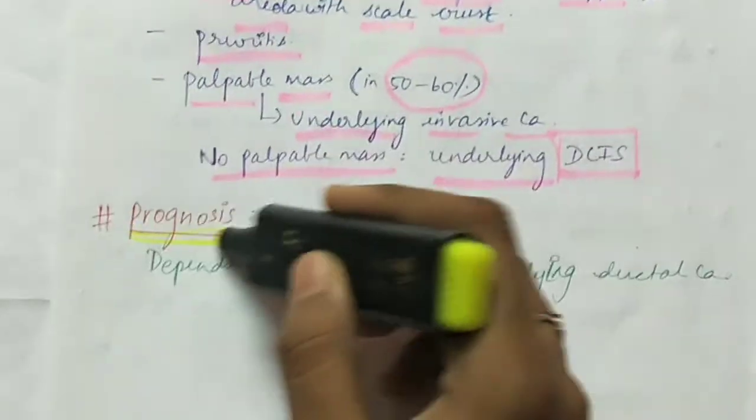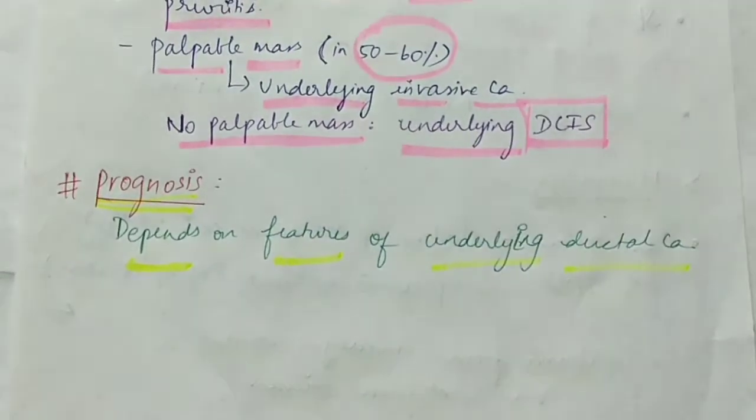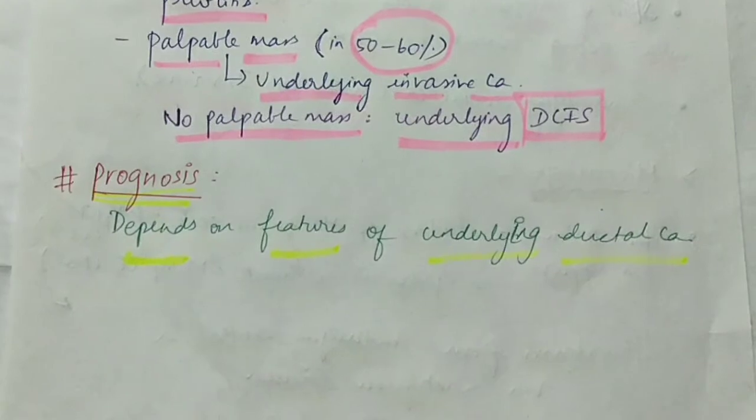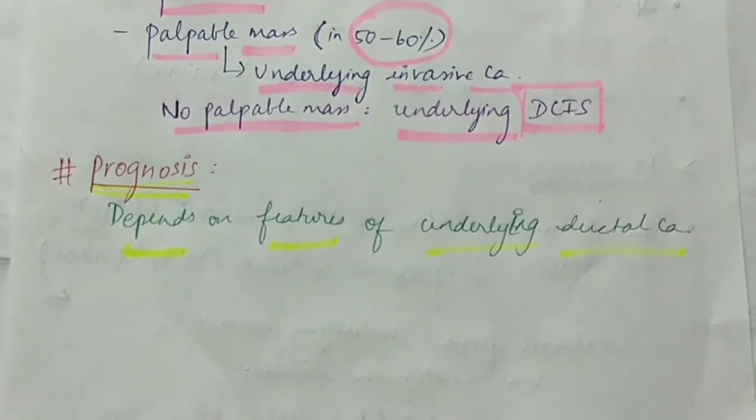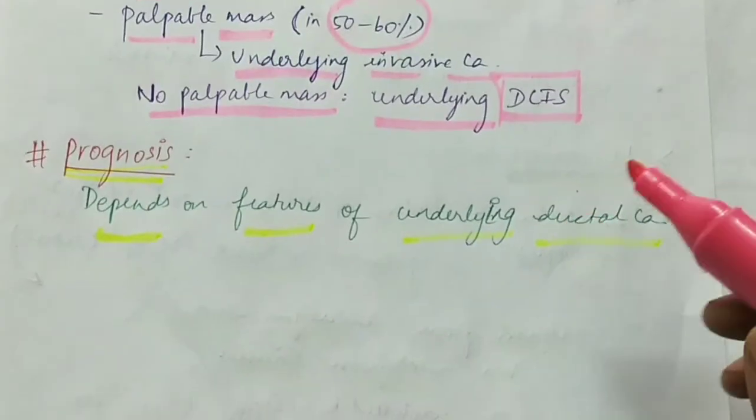Lastly, the prognosis. The prognosis depends on the features of the underlying ductal carcinoma. If it is well differentiated then it has good prognosis, and if it is poorly differentiated or undifferentiated then the prognosis is bad.